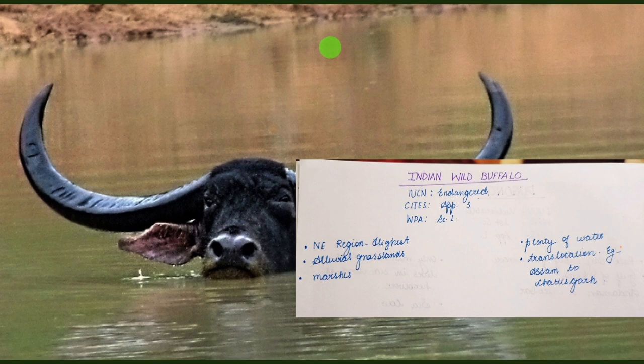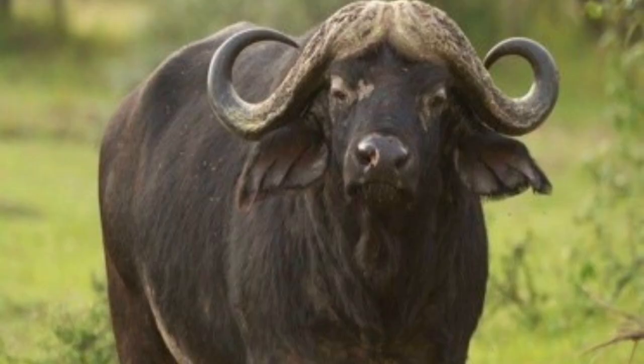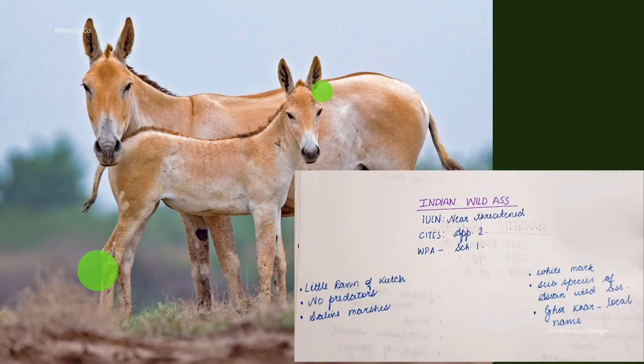They are known for translocation from habitats of higher concentration to habitats of lower concentration — one such example is translocation from Assam to Chhattisgarh. In IUCN status they are Endangered, listed in CITES Appendix 3, which means trade regulation is based on mutual understanding between countries. In the Wildlife Protection Act, they are in Schedule 1.